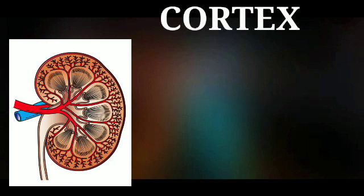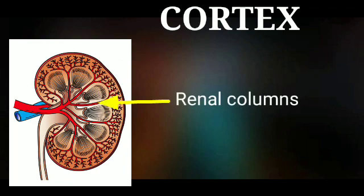The cortex is the part outer to the level of the base of the pyramids. The part of the cortex projecting between two adjacent pyramids is called the renal columns.